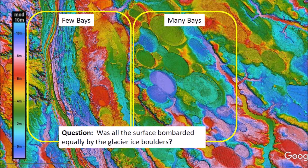The lack of bays along the fluvial channels raises the question of whether the entire surface was bombarded equally by the glacier ice boulders ejected by the extraterrestrial impact on the Laurentide Ice Sheet. This is actually a trick question — it is almost like asking if rivers get wet when it rains. The ejecta curtain would have deposited a fairly uniform distribution of ice projectiles across this 20-by-30-kilometer area. The Carolina Bays are fragile sandy structures easily eroded by horizontal water flow, so the Cape Fear River and Harrison Creek destroyed most of the bays that existed in that part of the landscape.